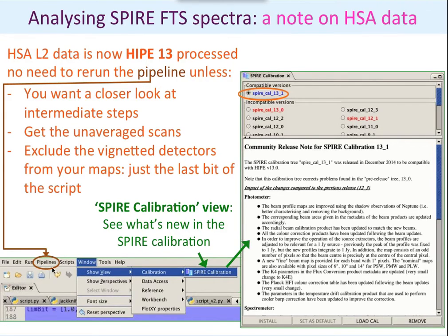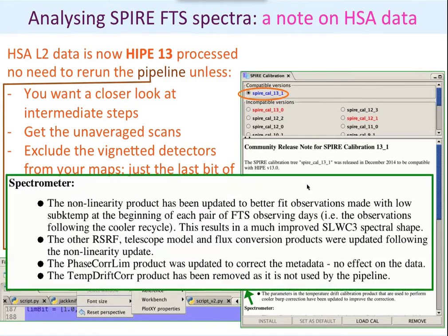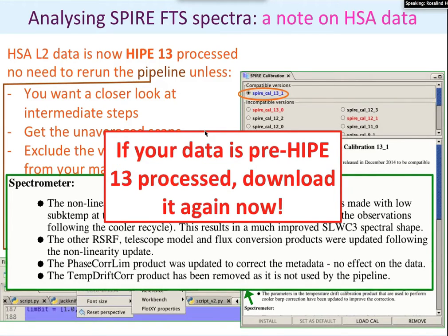If you do want to use the pipelines, you'll find them in the pipeline pool. There's also a quite handy SPIRE calibration view that you access through View > Calibration > SPIRE calibration. This collects all the calibration versions and shows which is the most up-to-date — in this case it's SpireCal 13 underscore one. It also gives you the release notes so you can see what's changed. For HIPE 13, the key update is the non-linearity product, which corrects the issue that Fran showed earlier. If your data isn't HIPE 13 processed, download it again from the archive now, and then you'll have the best data currently possible.